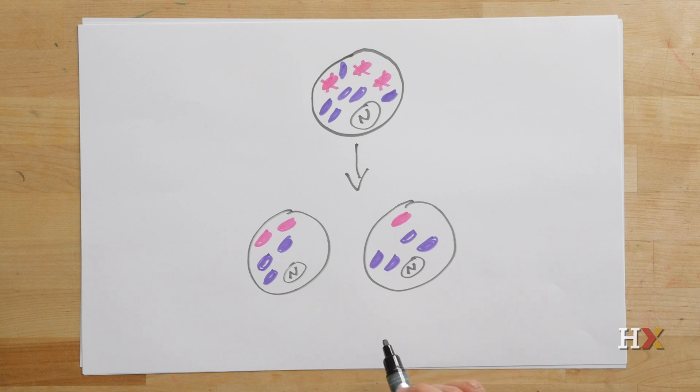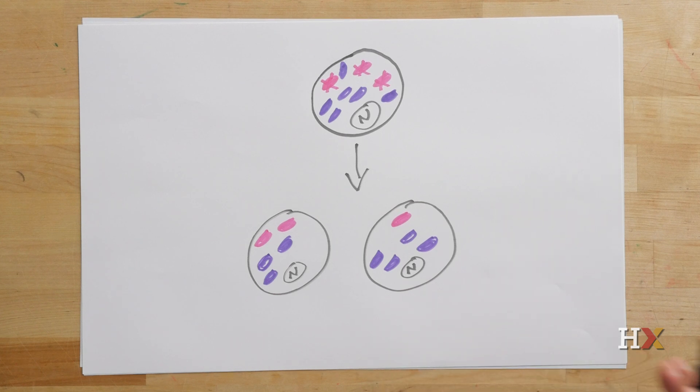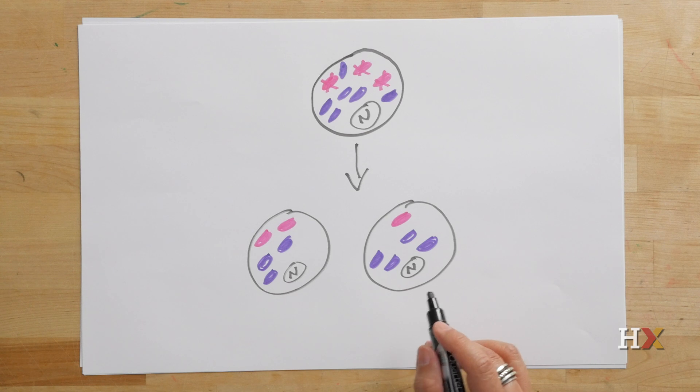And so this actually helps determine whether or not the individual in question, the resulting child that is produced from that egg, whether or not that child will express the disease or not express the disease, or if it does express the disease, how severely affected they might be by the mitochondrial disease.